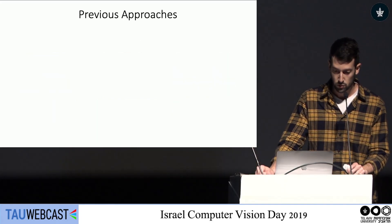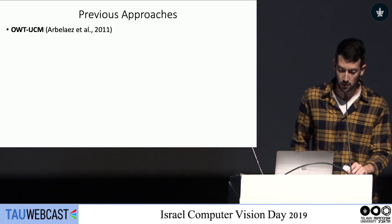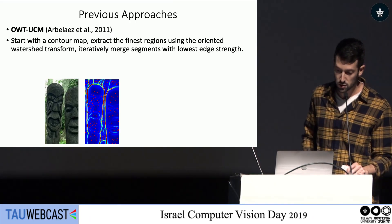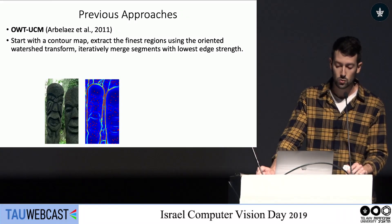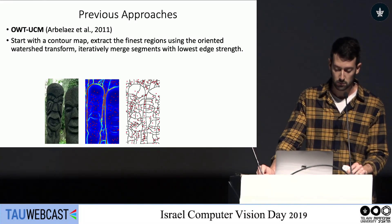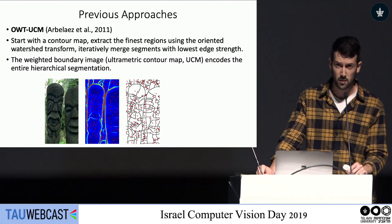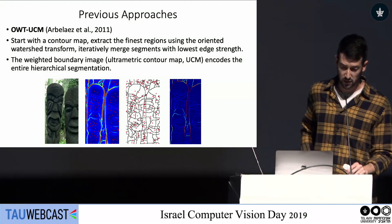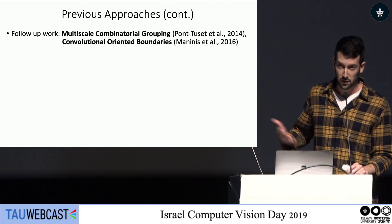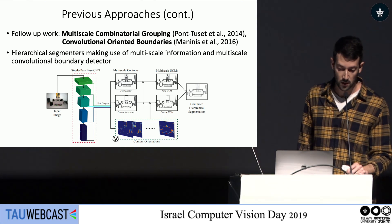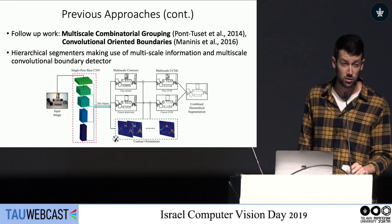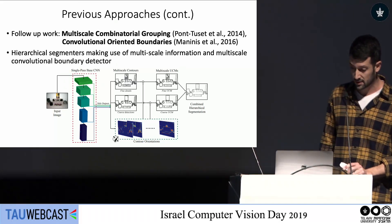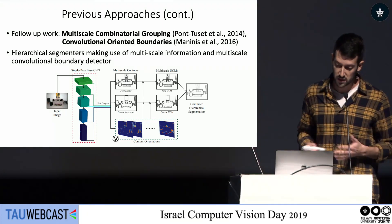A quick overview of recent approaches. In 2011, Malik's group presented the Oriented Watershed Transform UCM, where you start with an oriented contour map, extract the finest regions using the Oriented Watershed Transform, and then iteratively merge segments with the lowest edge strength to get the segmentation hierarchy. This hierarchy is presented as an ultrametric contour map or UCM, essentially a weighted boundary image. Follow-up work built on this, fusing multiscale information and training multiscale convolutional boundary detectors. Overall, the edge detection stage is critical for this algorithm, and DNNs were mainly used to improve this stage.